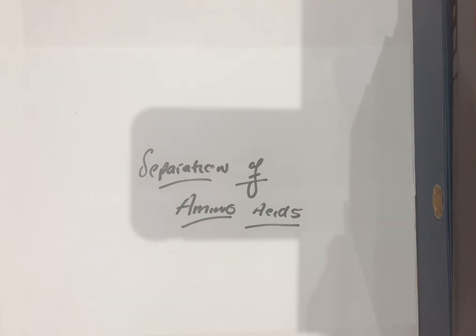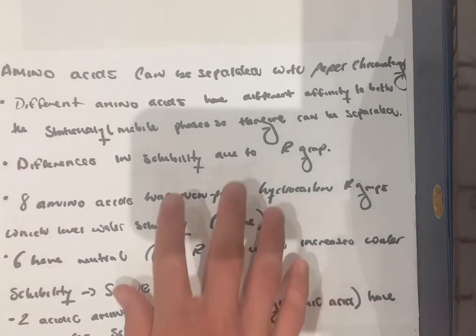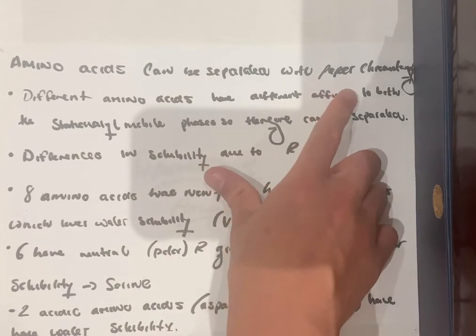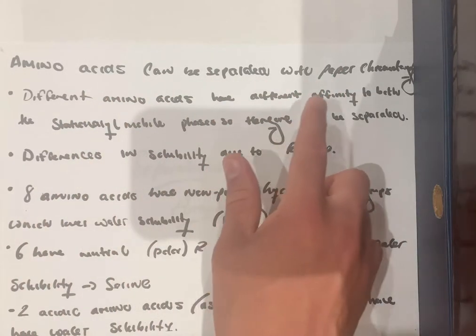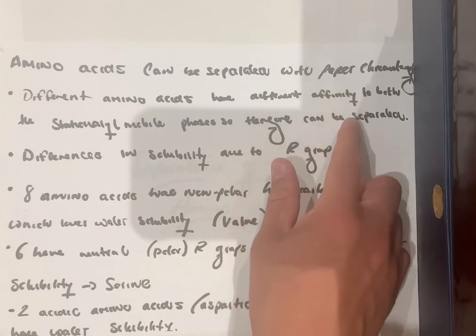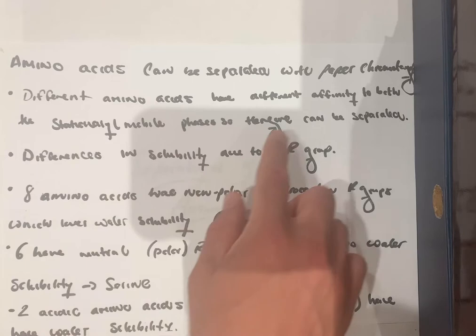So without further ado, let's get started. Amino acids can be separated by using a technique known as paper chromatography. Different amino acids have different solubilities and different affinities to both the stationary and mobile phases and therefore can be separated.